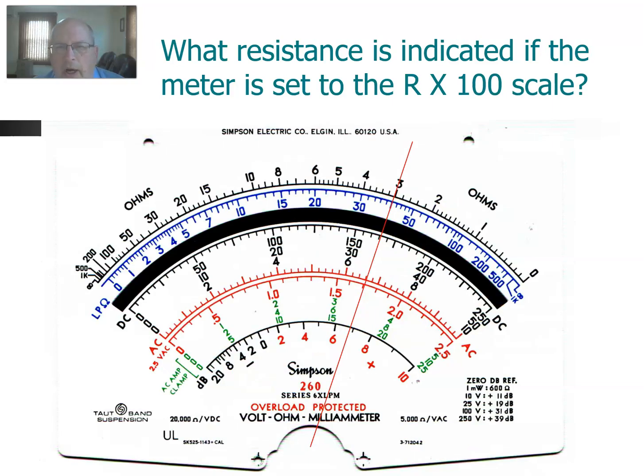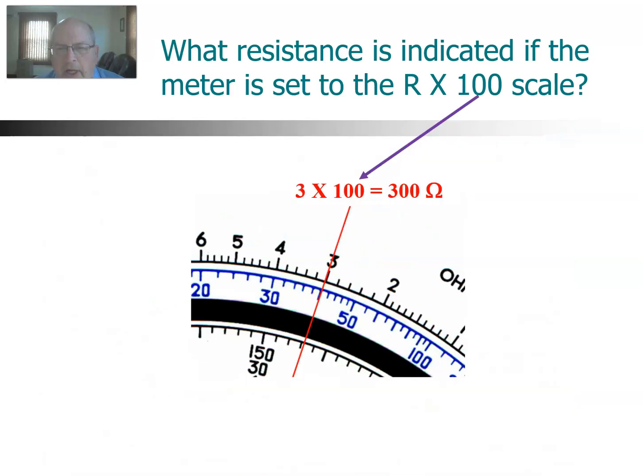Let's look at another one. This time we're on the R times 100 scale. We see that is right on the 3. So we take that reading of 3 and multiply by 100, and we get 300 ohms. Remember, prior to doing this, we're always adjusting that ohms adjust by touching the leads together and making sure we get a zero reading. When we switched to the R times 100, we had to re-zero the meter. Very important.